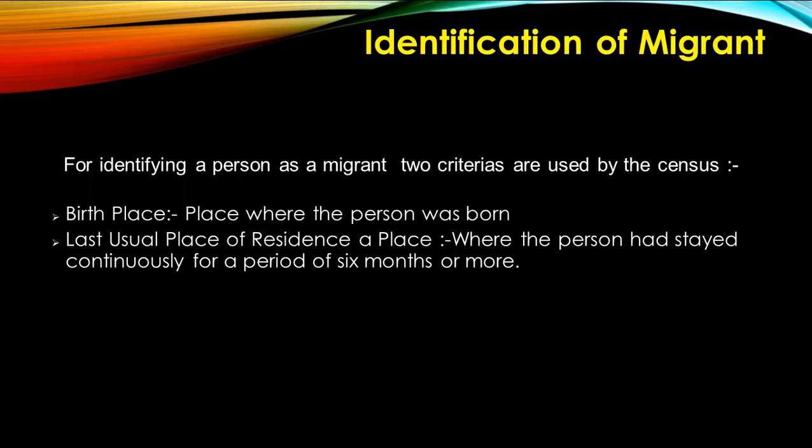The next topic is identification of a migrant. How do you identify whether a person is a migrant or not? Two criteria are used by the census. The first one is birthplace — the place where the person was born. The second one is last usual place of residence — where the person had stayed continuously for a period of six months or more. For example, if a person belongs to Warangal and is staying continuously in Hyderabad for more than six months, he is a migrant. But if he stayed less than six months, he is not a migrant.